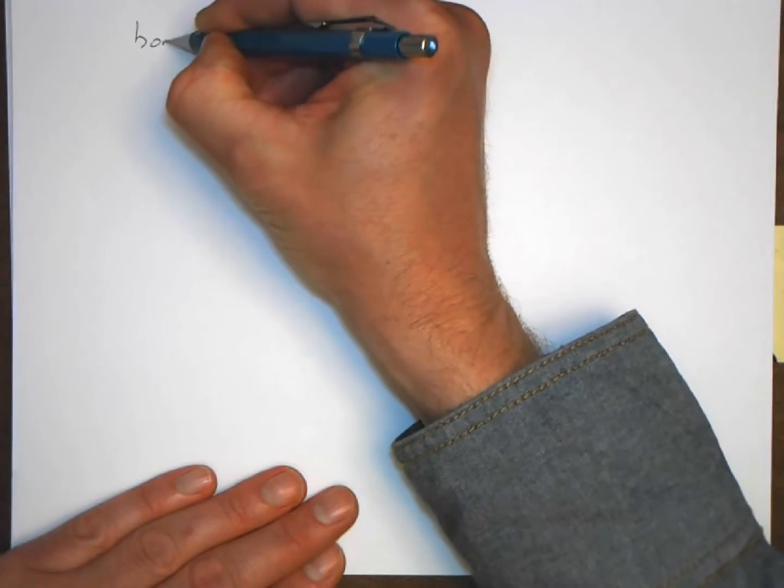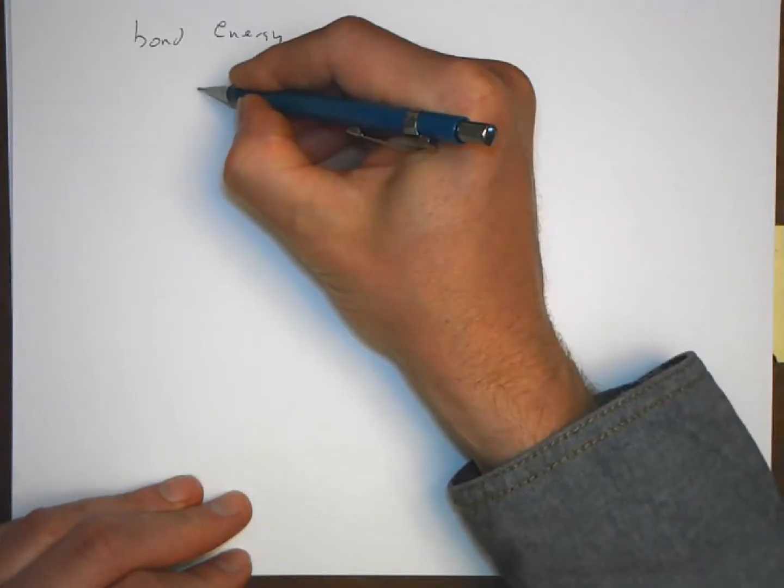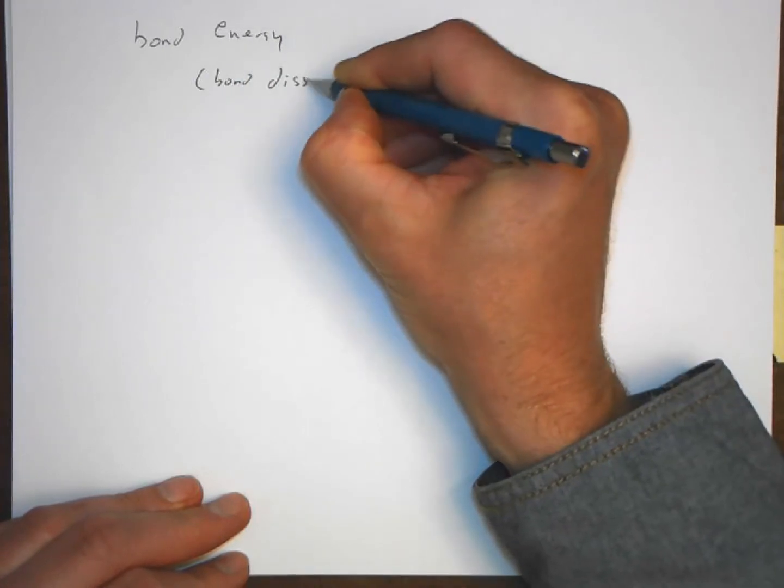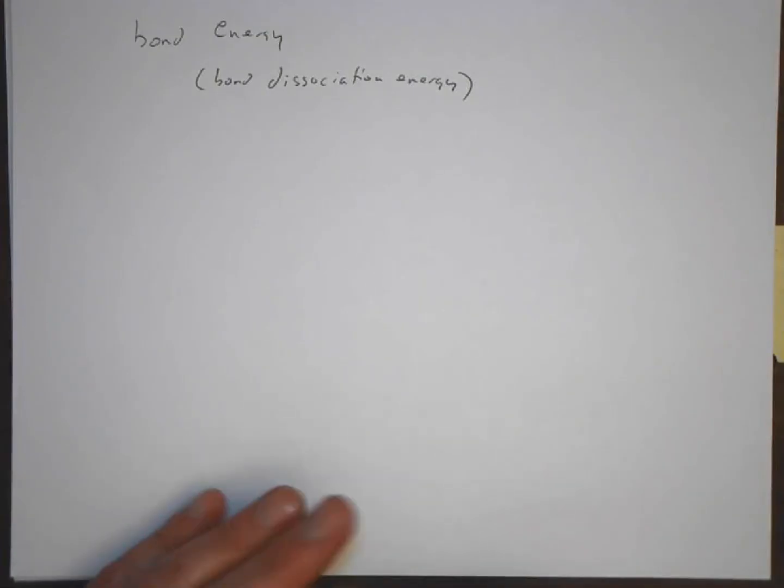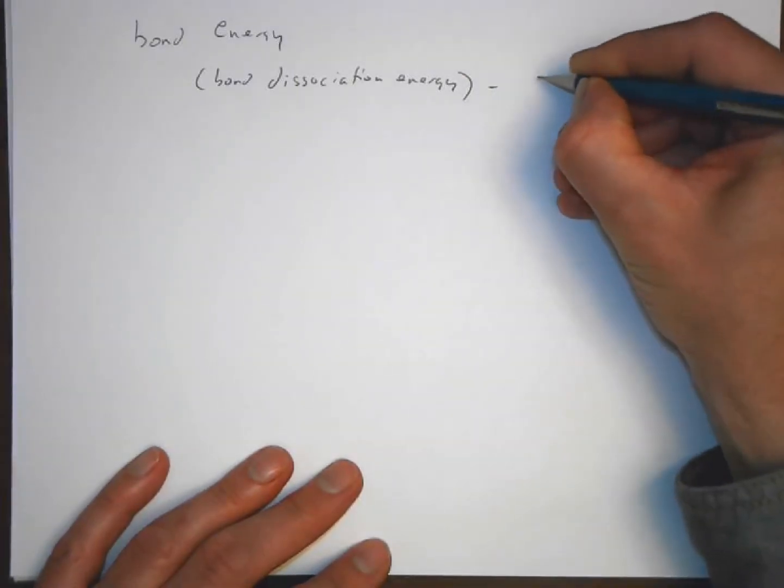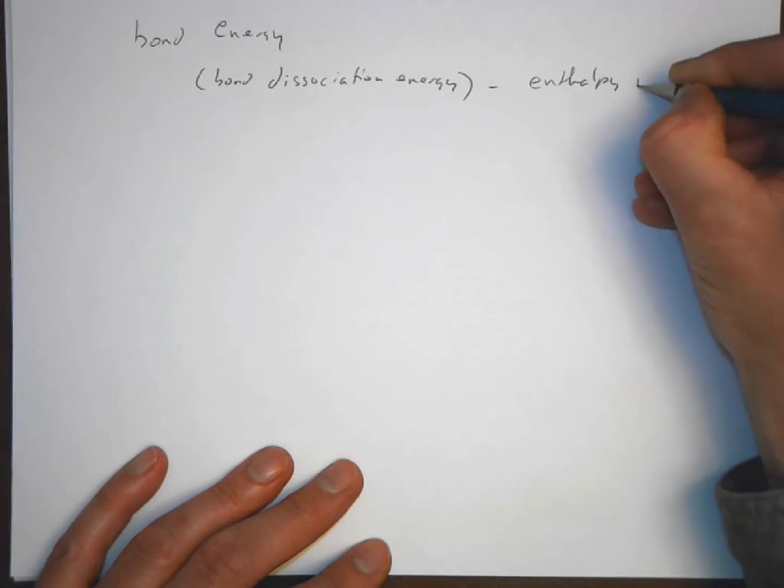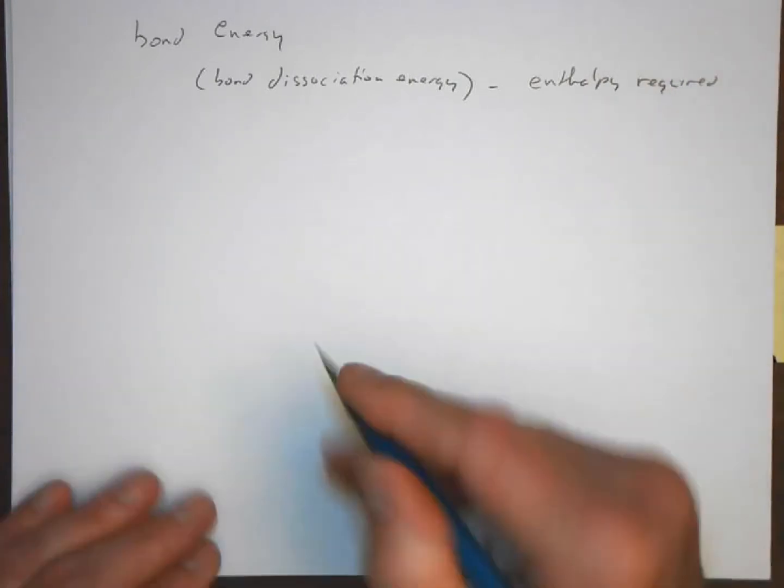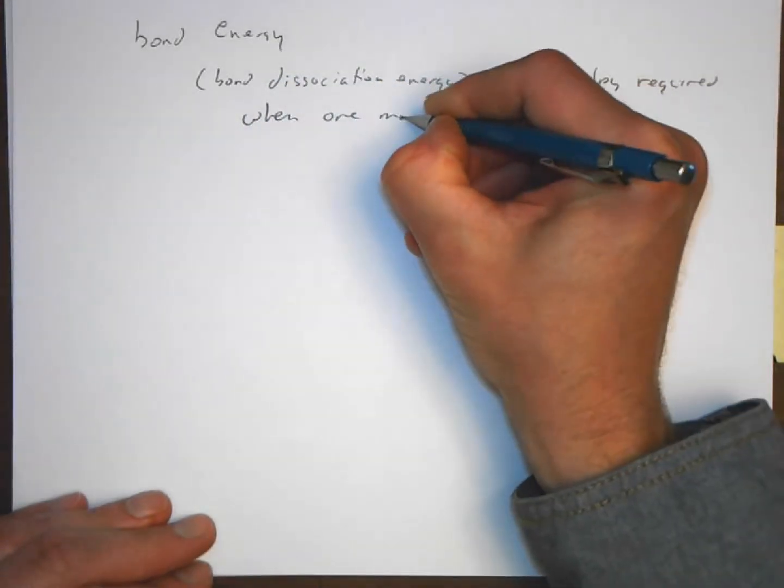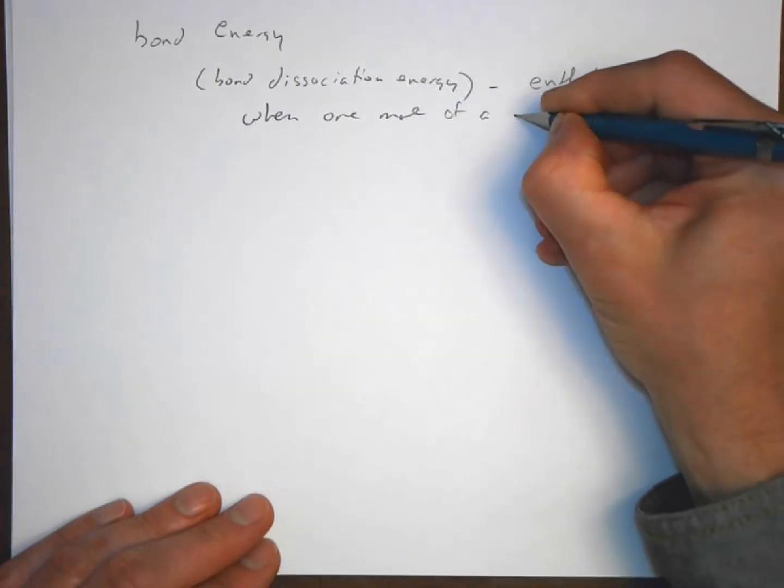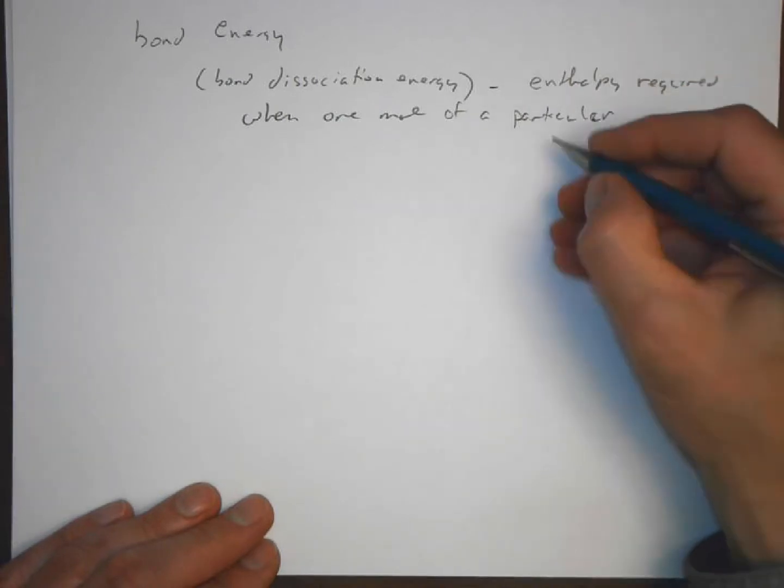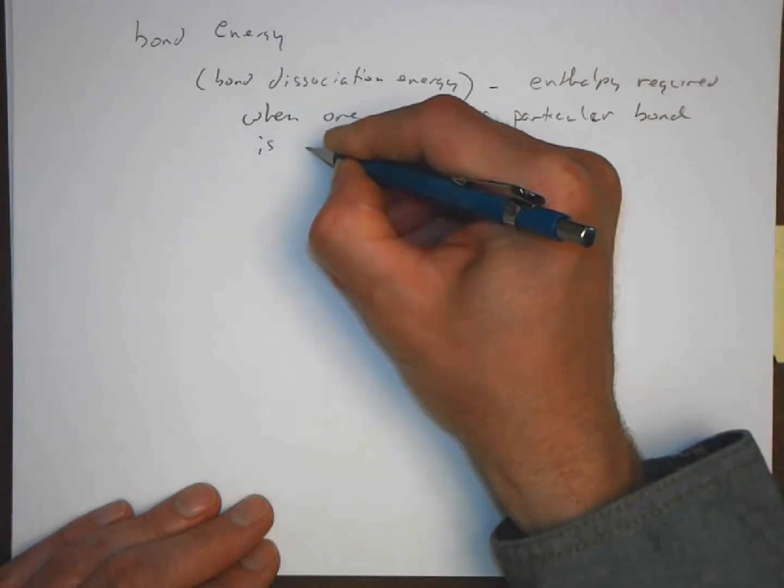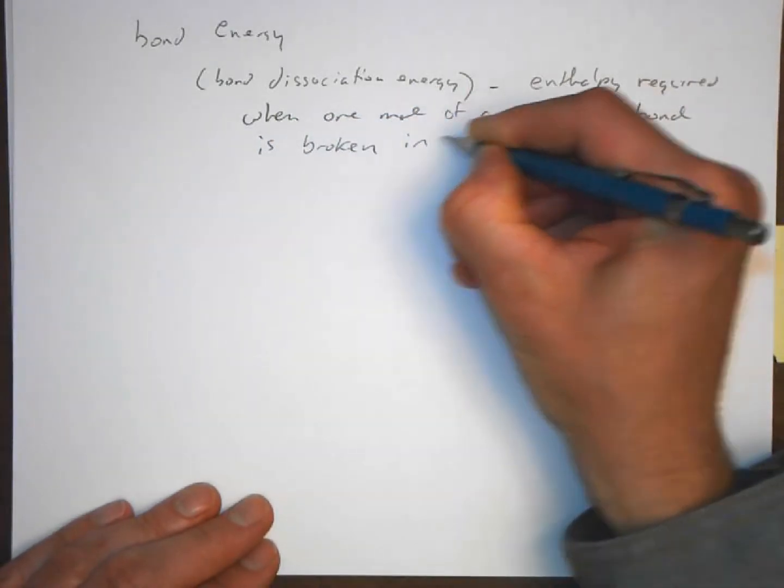Let's look at bond energy next. Bond energy, or bond dissociation energy, in other words, the energy required to break the bond in a gaseous state. So the bond dissociation energy is the enthalpy required. So it requires energy to break bonds. So one mole of a particular bond is broken in the gaseous state.